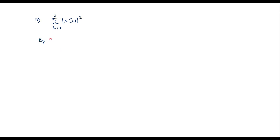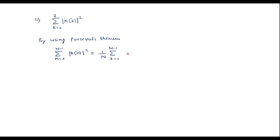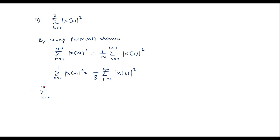Now, by using Parseval's theorem, we can represent it as summation n equal to 0 to N minus 1 of x of n square equal to 1 upon N, summation k equal to 0 to N minus 1 of x of k square. This is Parseval's theorem. So x of n square equal to 1 upon 8, summation k equal to 0 to N minus 1 of x of k square. Therefore, summation k equal to 0 to N minus 1 of x of k square is equal to 8 into summation n equal to 0 to 7 of x of n square.